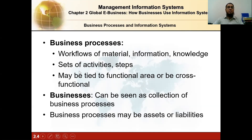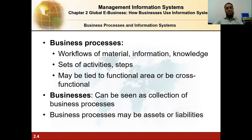A business process is a set of activities and steps that may be tied to functional areas or be cross-functional. There are four functional areas we studied earlier in the outline of the chapter, where the manufacturing part is covered under logistics.